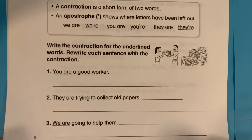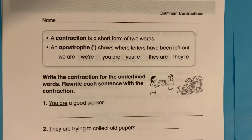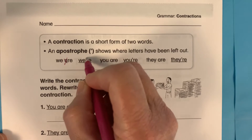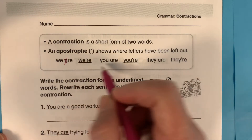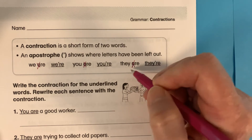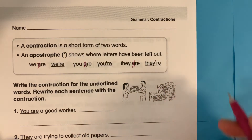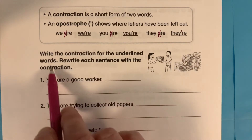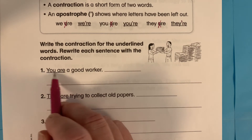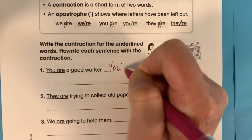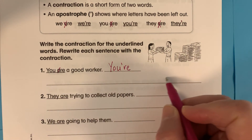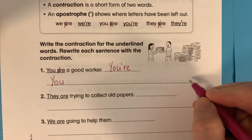The next page is more contraction work. A contraction is a short form of two words. An apostrophe shows where the letters have been left out. So 'we are' — we take away the A and we add the apostrophe and squeeze it together and have 'we're.' You are — once again you take away the A, add the apostrophe and squeeze it together. They are — same thing: take away the A, squeeze it together and add the apostrophe. So here you're going to write the contraction for the underlined words and rewrite each sentence with the contraction because that's good practice. Write the contraction for the underlined word right here — U apostrophe R-E. I took out the A, squeezed it together and added the apostrophe. And then you'll write the whole sentence right there, making sure you start with a capital and you end with a period.